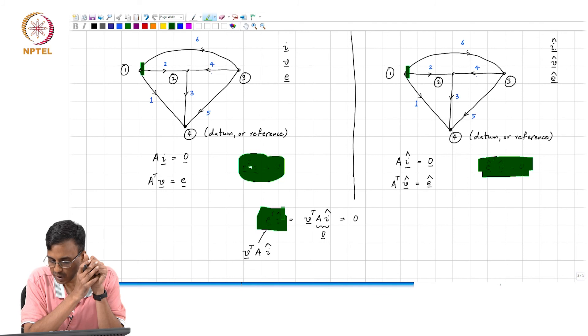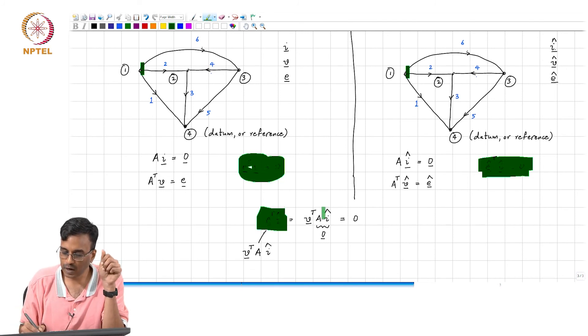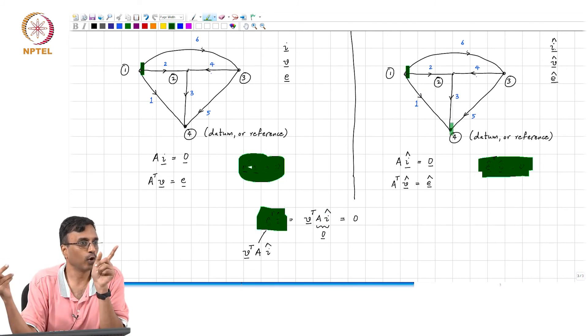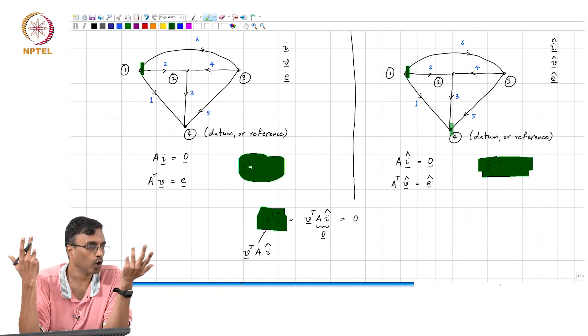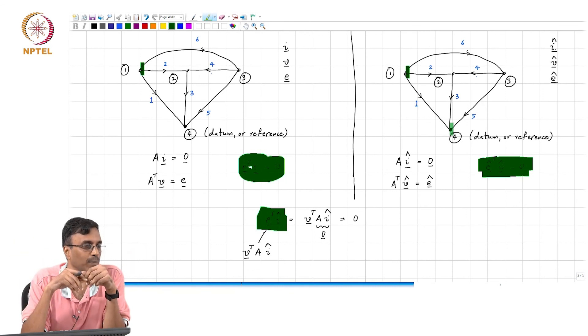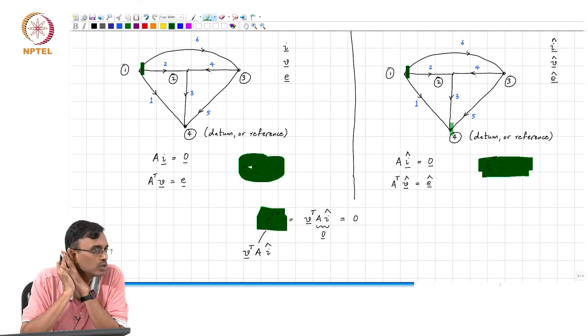At first, you might think that, how does the network know what current is flowing in the branch in some network that it does not even know? And magically all these products add to 0.